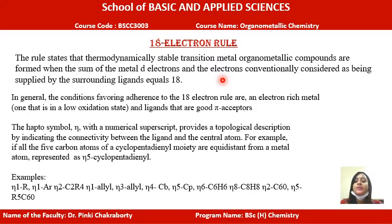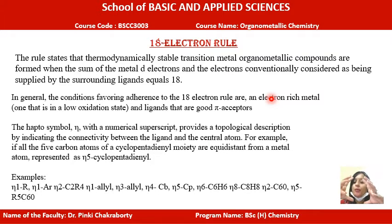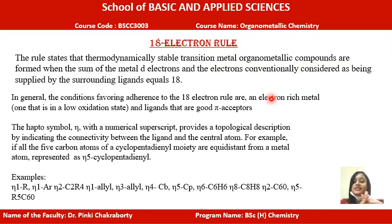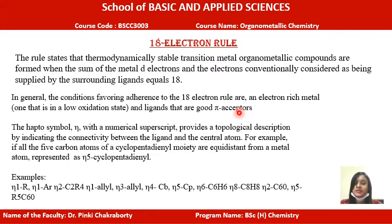There are certain preferences in organometallic chemistry for the 18 electron rule. First, whatever metal is forming the organometallic compound, it should be electron rich. That is, metals which are in their lower oxidation states are preferable for the 18 electron rule, and also the ligands should be good pi electron acceptors.